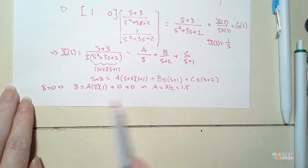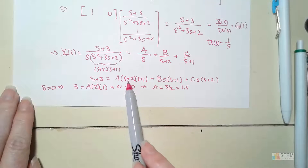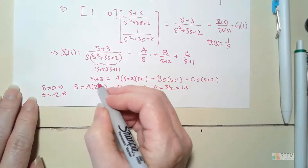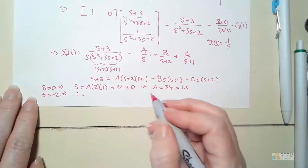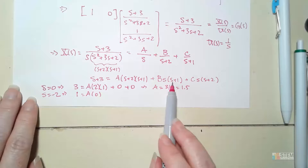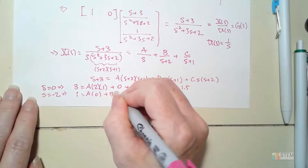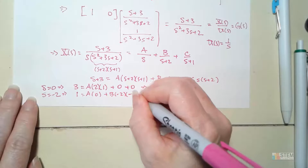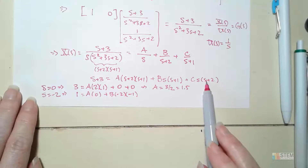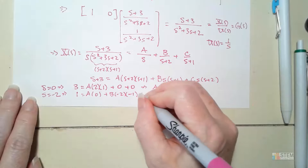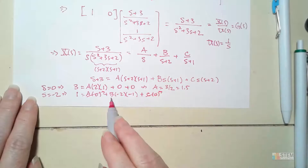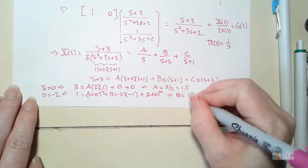Now let S equal negative 2: the left side gives negative 2 plus 3 equals 1. The A term goes to zero because (−2+2)=0, and the C term goes to zero because (−2+2)=0. So we have 1 equals B times (−2) times (−1), which gives B equals 0.5.